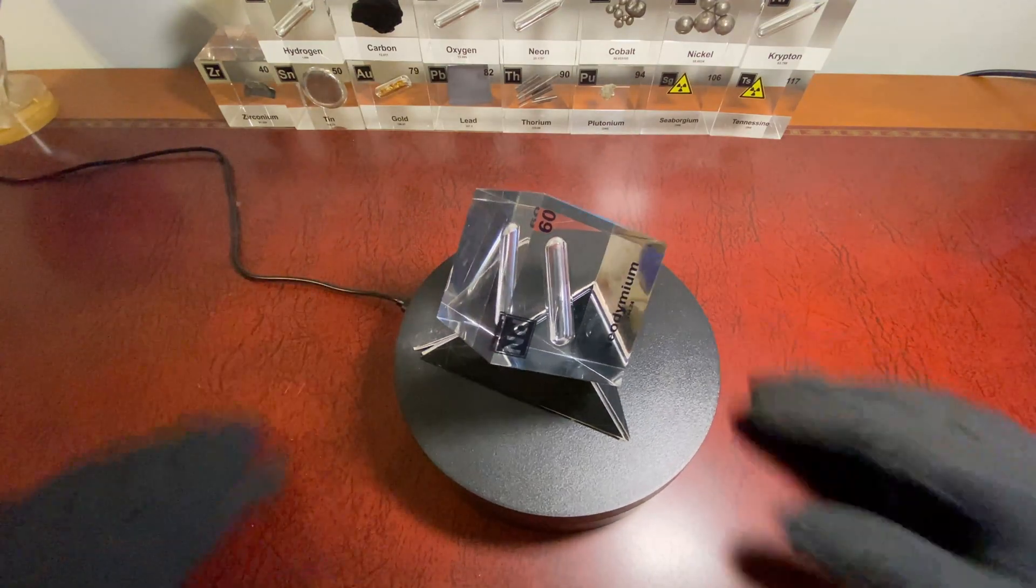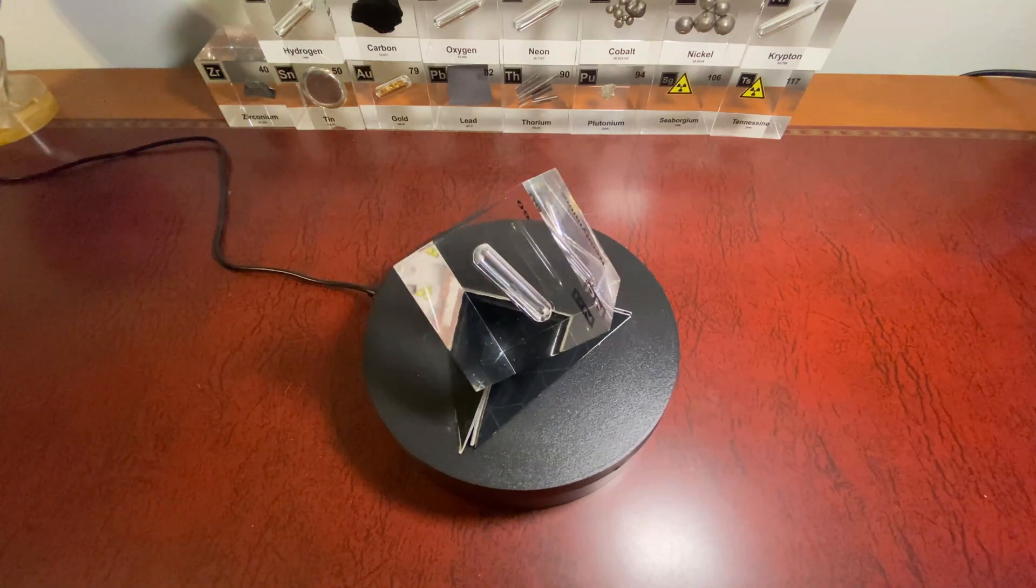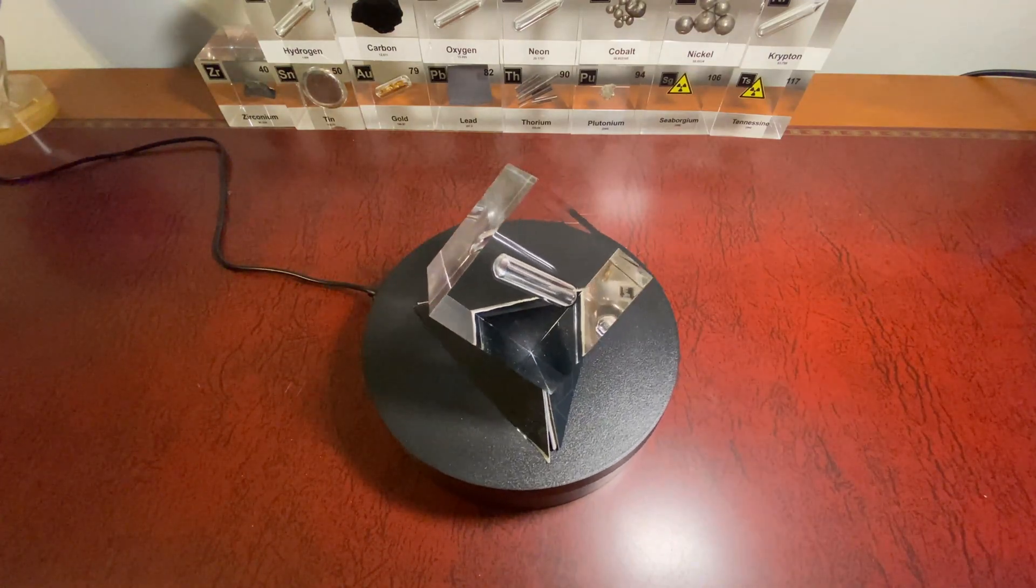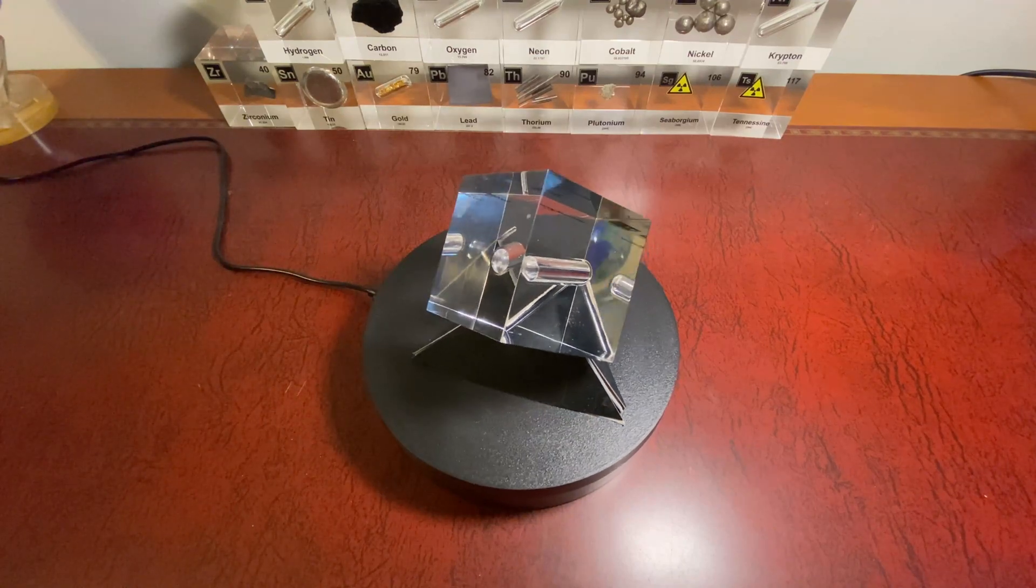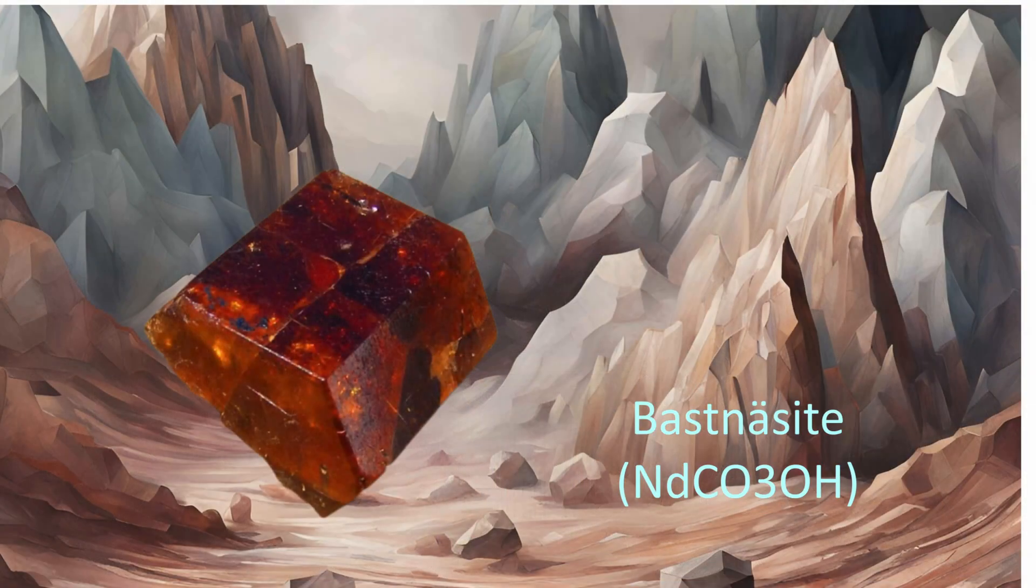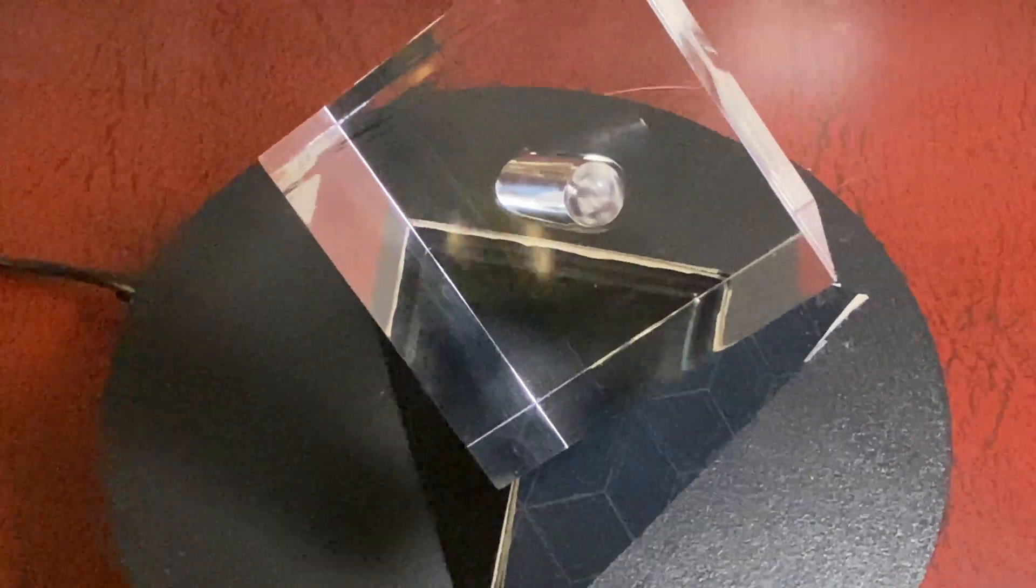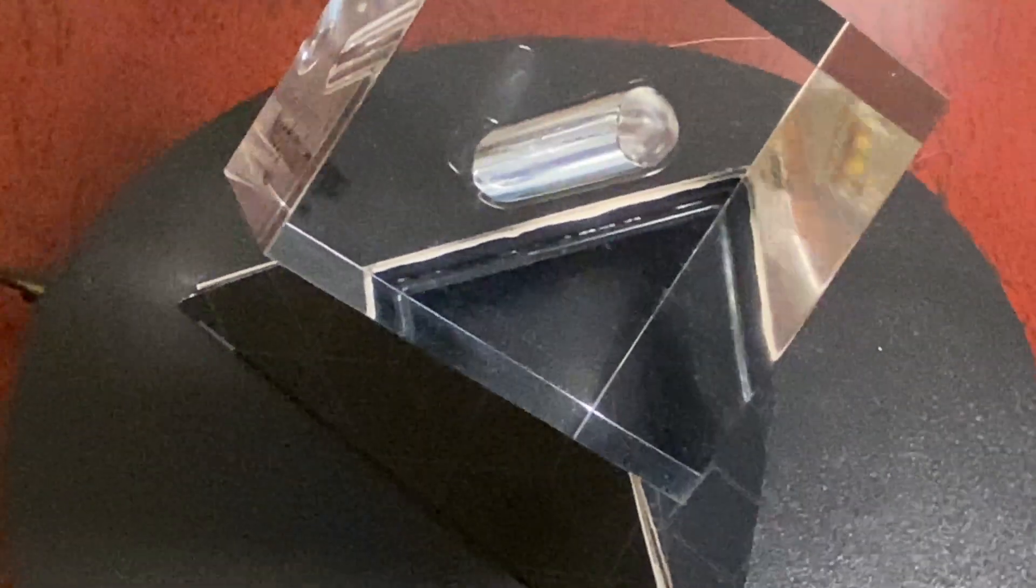That include several other lanthanides. It is typically found in minerals such as monazite and bastnäsite, which are rich in various rare earth elements. These minerals contain a mix of lanthanides.